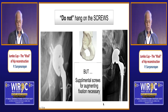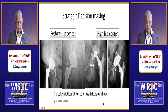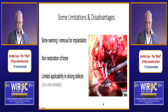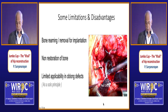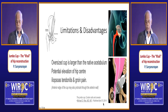Do not hang a loose cup on just a couple of screws — they will always fail. You must have some fixation and then additional screws to hold it. Two strategic points: restore the hip center, or accept the high hip — it depends on the pattern and geometry of the socket. Limitations include that you ream bone often to get hemispherical surface but do not restore any bone. Limited applicability in very oblong situations where a diametric fix is not possible. Oversizing too much can cause iliacus irritation.